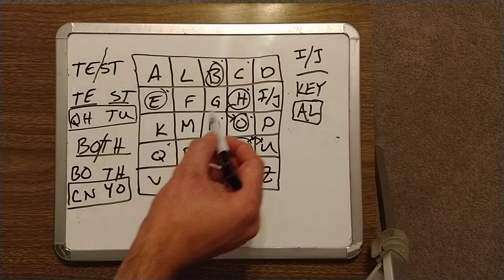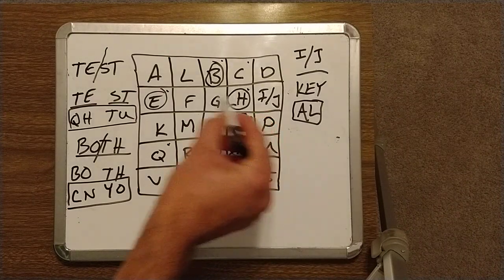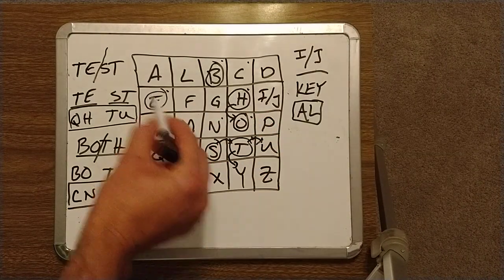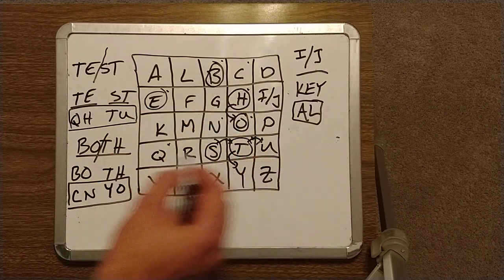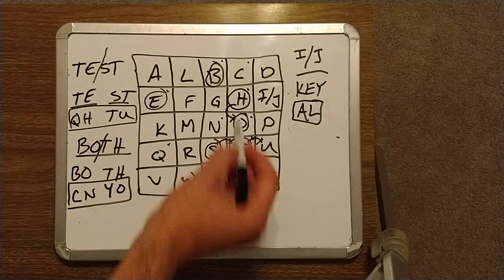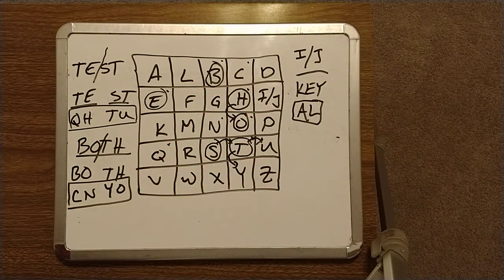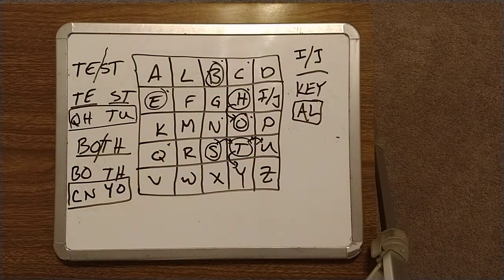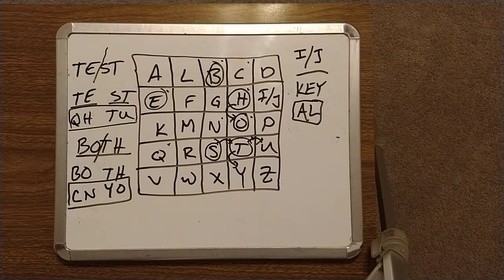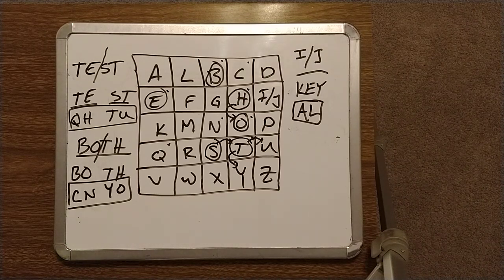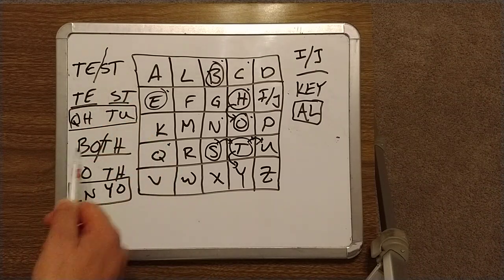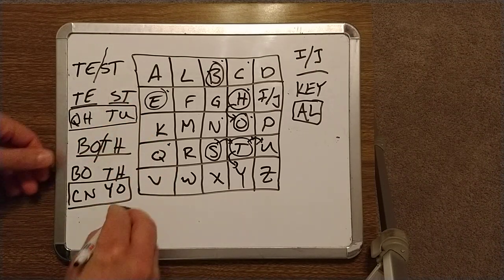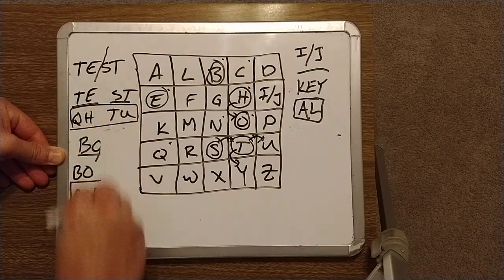So you've now seen how we encrypt whenever you have letters that are not in the same column, not in the same row. You've seen how we encrypt with letters that are in the same row and letters that are in the same column. Now there are a few scenarios here that we have to understand.